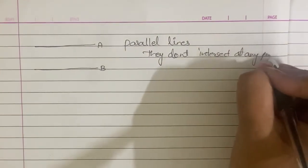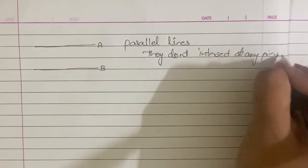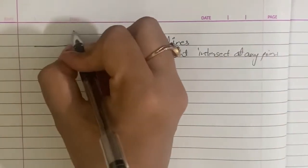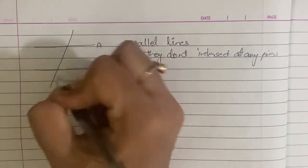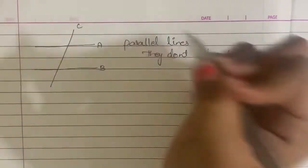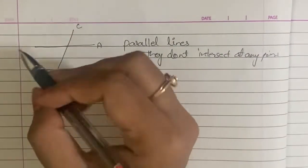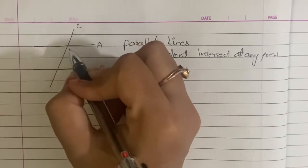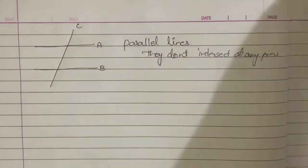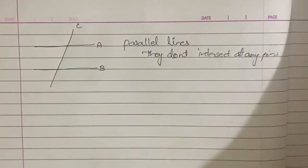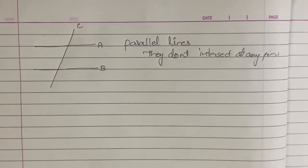I will show you the intersection. Line C — now I will show you the different angles formed. Different angles.